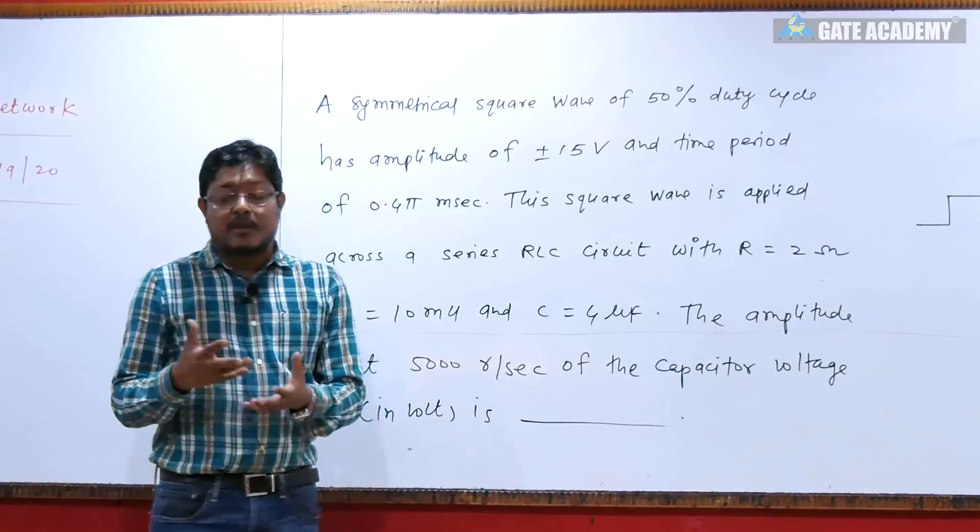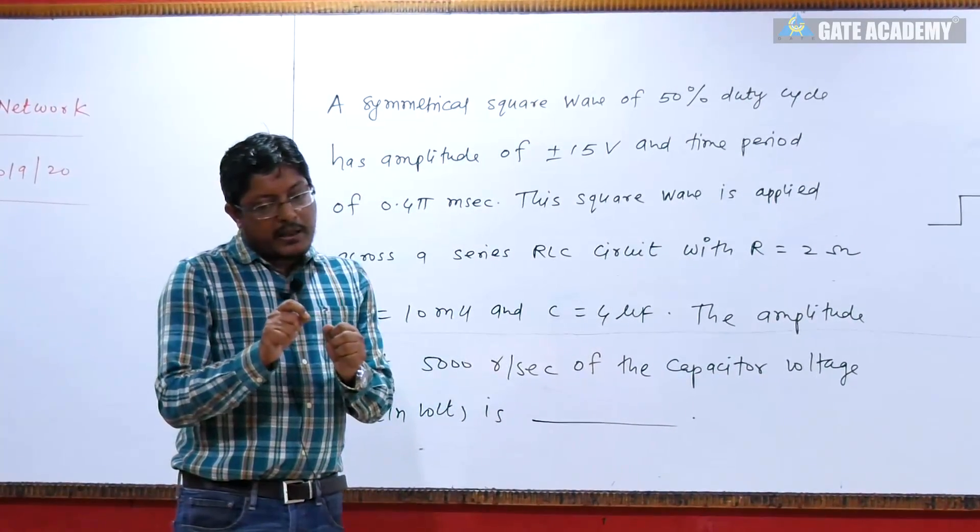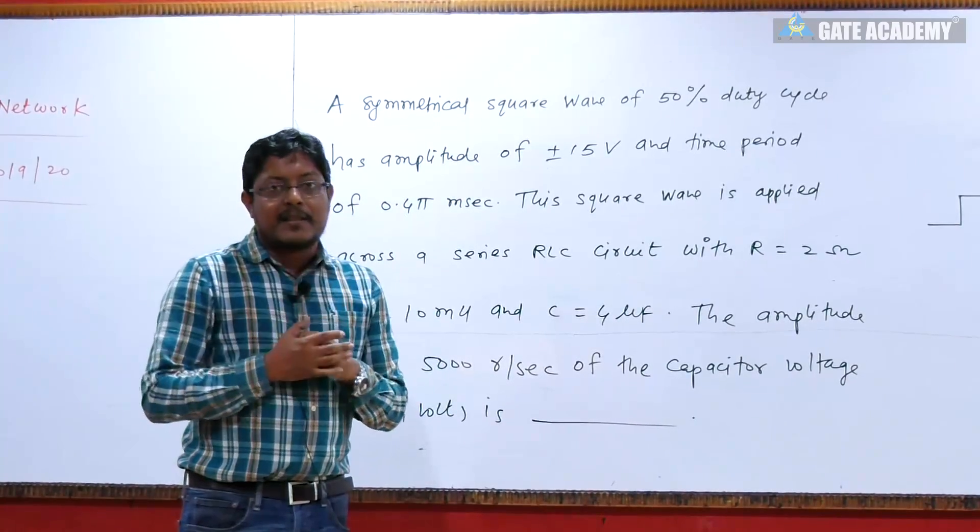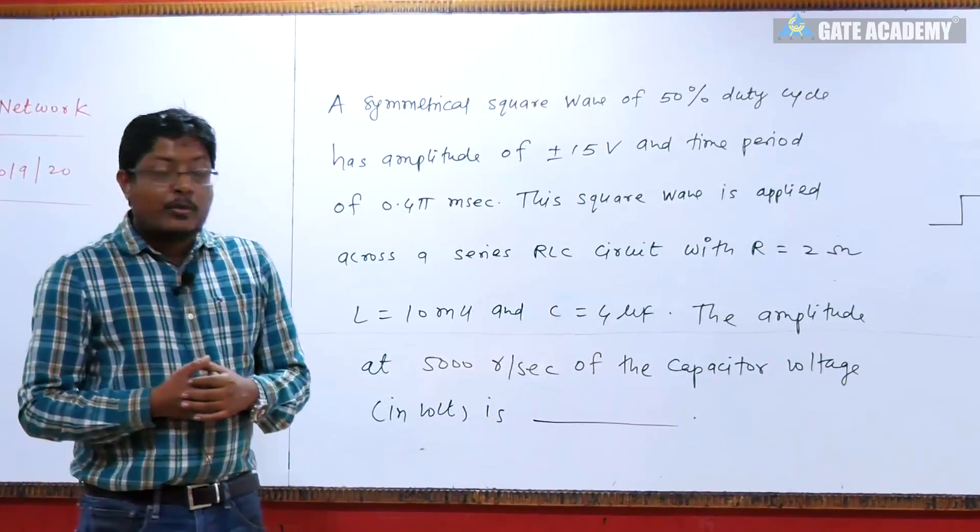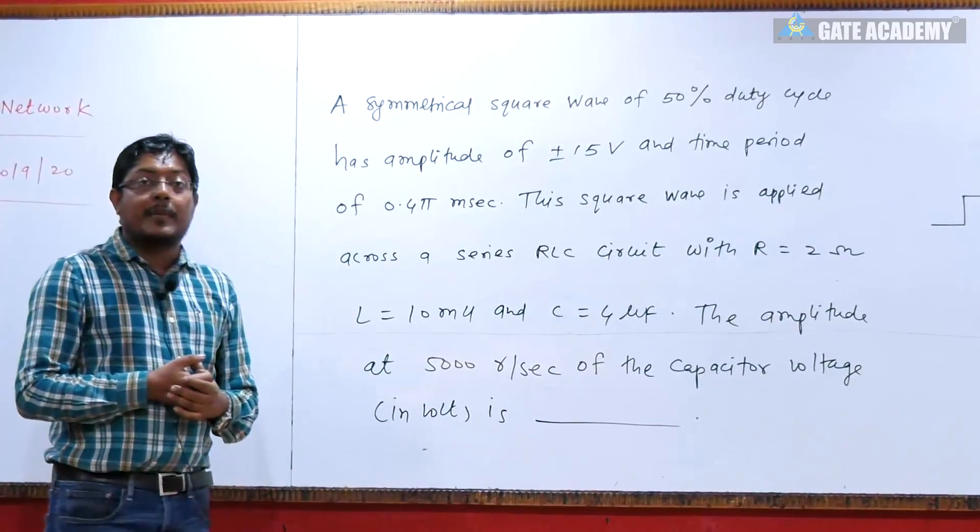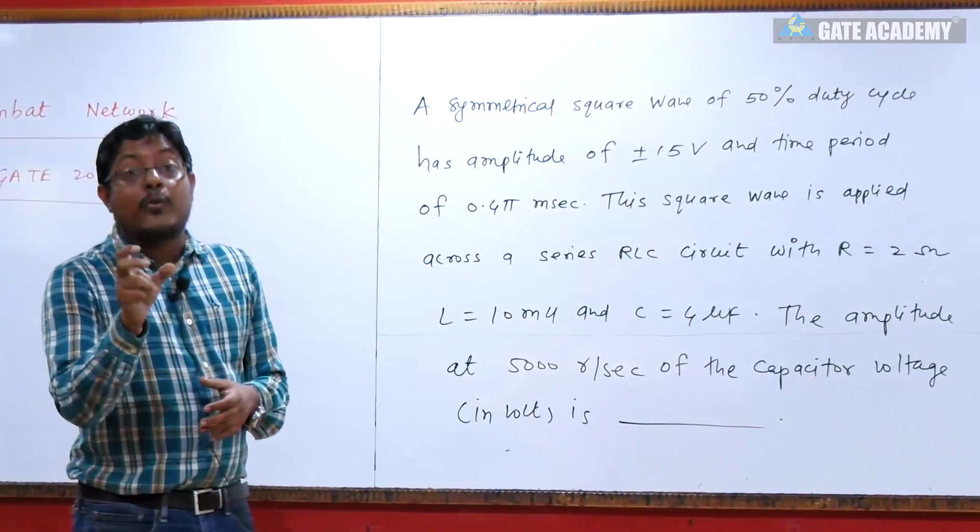This is a very good question. You have to tell the capacitor voltage. And you have to use the frequency 5000 radian per second. So this matters: How do you engage this question? How do you handle it? Because you have a bipolar square waveform and you have a frequency given, 5000 radian per second. How do you manage this frequency?